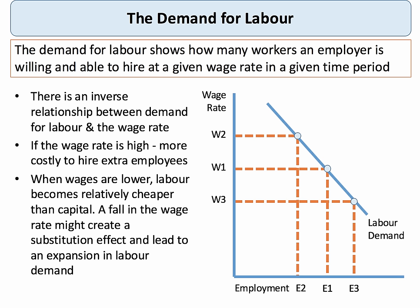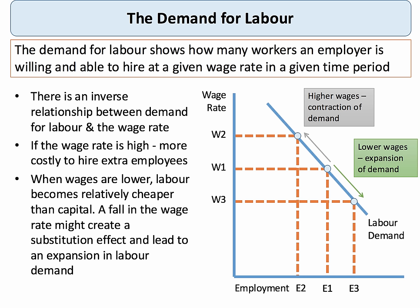But when wages fall, labour may become relatively cheaper than capital. Think about a substitution effect and an income effect — if wages go down, with a given budget a firm could employ more people. And given that capital could be a substitute for labour, if wages fall then labour could become more cost effective compared to capital equipment. So higher wages cause a contraction of labour demand and lower wages cause an expansion down the labour demand curve.